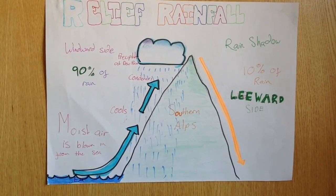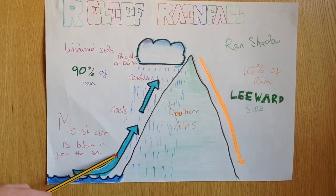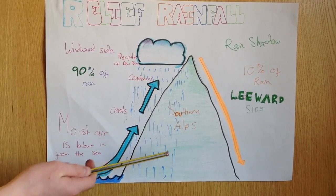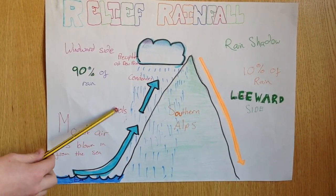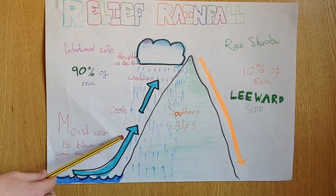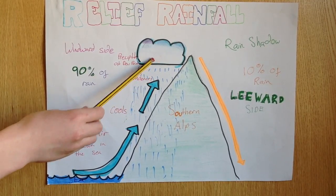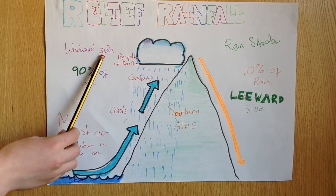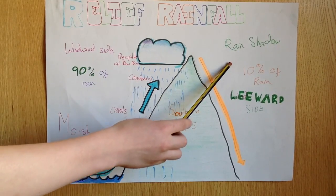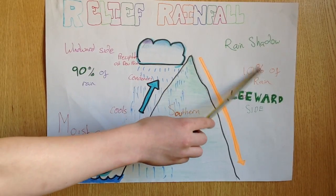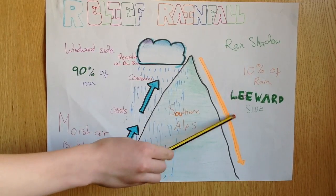This is a clip about relief rainfall. Moist air is blown in from the sea and up the mountain — which could be the Southern Alps, or in this country the Pennines or the Lake District — and it cools, condenses and precipitates at the dew point of the cloud. This is the windward side where 90% of the rain falls. On the other side of the mountain there is a rain shadow where 10% of the rain falls. This is also called the leeward side.